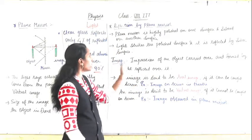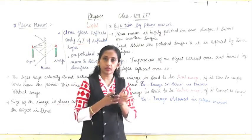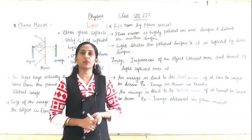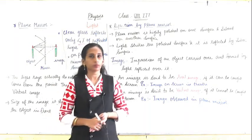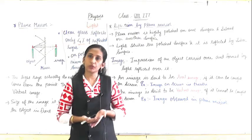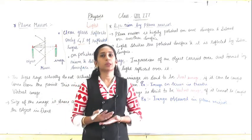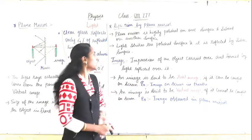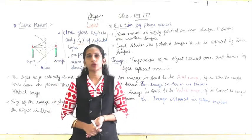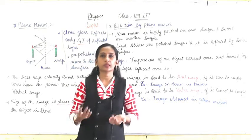So what happens is light strikes the polished coated surface, and the silver surface reflects the light back. This is how reflection takes place in a plane mirror. We are going to study how images form in the plane mirror — what type of images form and what an image is. Every day you see your face in the mirror; have you ever thought about how images form?